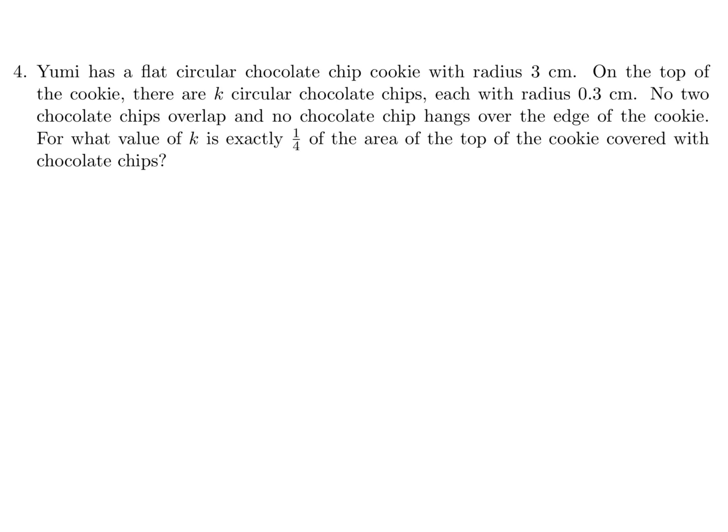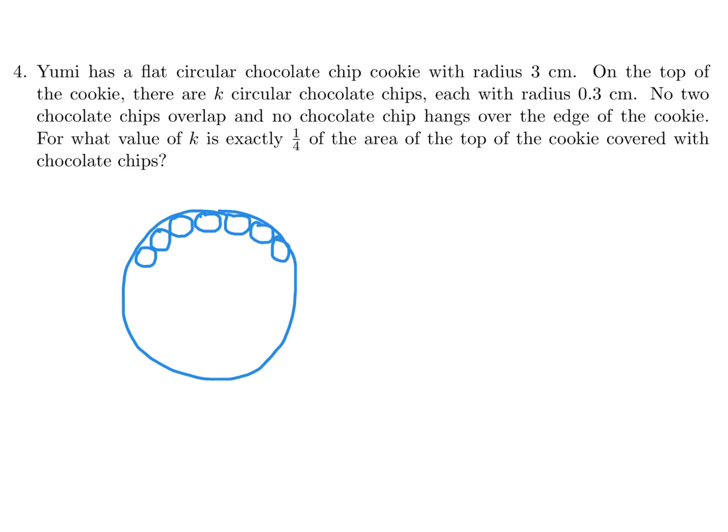Yumi has a flat circular chocolate chip cookie with radius 3 centimeters. On top of the cookie there are K circular chocolate chips, each with radius 0.3. No two chocolate chips overlap and no chocolate chip hangs over the edge of the cookie. The chips are covering the surface, attached to each other and to the edge.